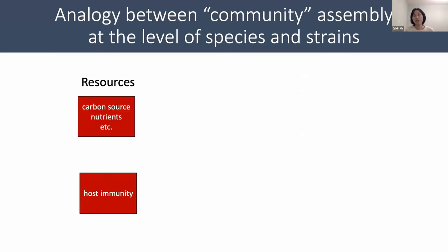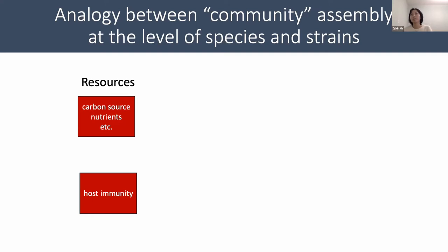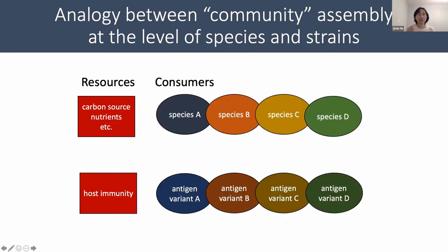In yesterday's and today's previous talks, we have seen a lot of studies that focus on communities composed of resource-consumer type interactions. In today's talk I'm going to focus on antigen diversification, where we can see a very strong analogy between community assembly at the level of species and at the level of strains. We can think of resources that different species are competing for — carbon sources and different kinds of nutrients — but we can also consider host immunity as a kind of resource, and different antigen variants compete for these renewable host immunity resources.